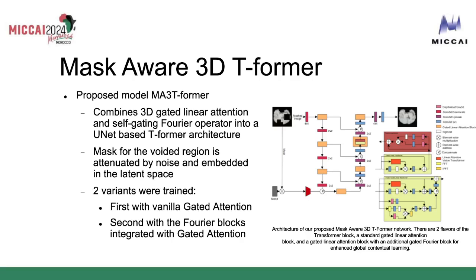MaskWare 3D Transformer is the model we propose, which integrates basically everything discussed so far. It combines the 3D gated linear attention and self-gated Fourier operator into a U-Net-based deformer architecture. The mask for the avoided region is also attenuated by noise and embedded in the latent space to preserve the stochastic behavior of the model. We trained two variants: the vanilla gated attention, which uses the linear attention mechanism straight from the paper, and a Fourier operator version of the linear gated attention. The figure shown here illustrates the model in much more detail.